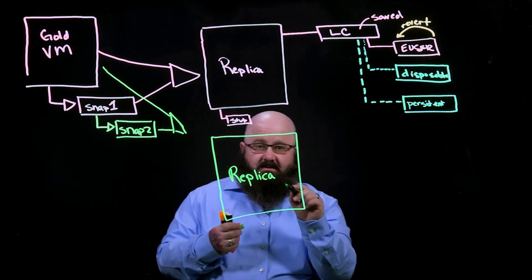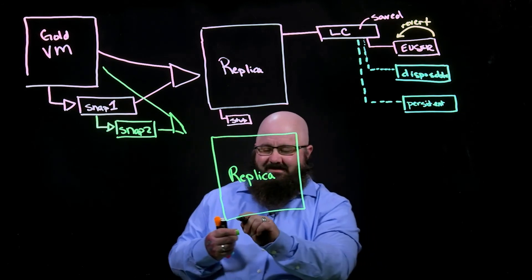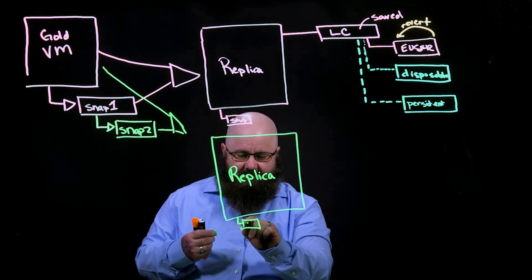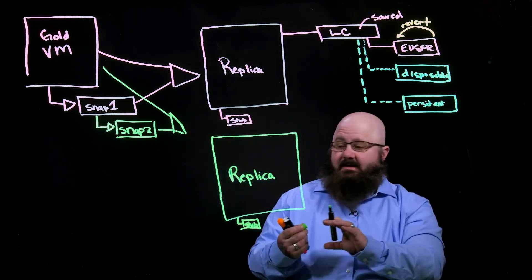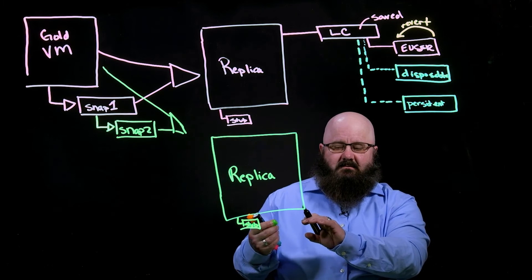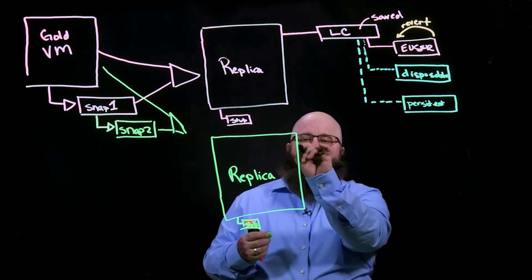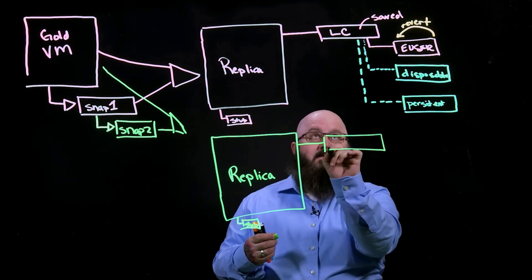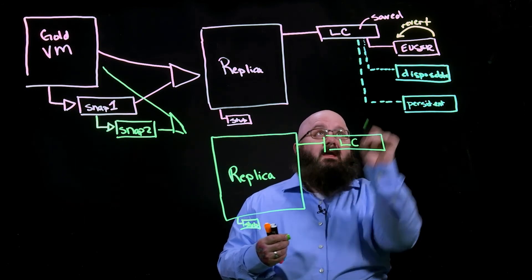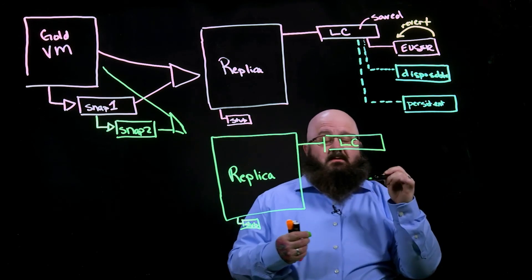And what does our replica do? Of course, it creates a little stub to see: can I create a new link clone? Once that works, we then create our new link clone and actually delete these ones up here.